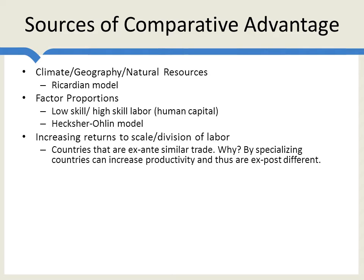The theory of comparative advantage says that's a little bit odd, because you want to trade with countries that are different than you, not with countries that are the same as you. So how does increasing returns explain the fact that countries which are quite similar trade a lot? Well, by specializing, countries can increase their productivity. They become ex-post different — after they specialize, they become different, and then they can trade based upon those increases in productivity.